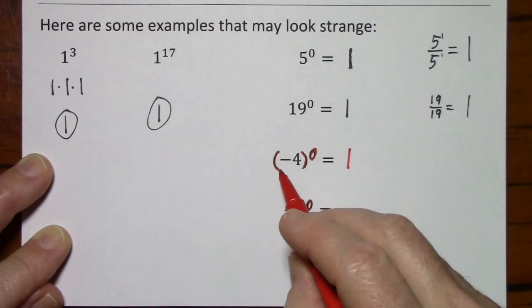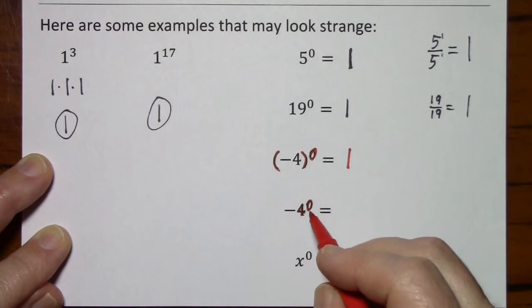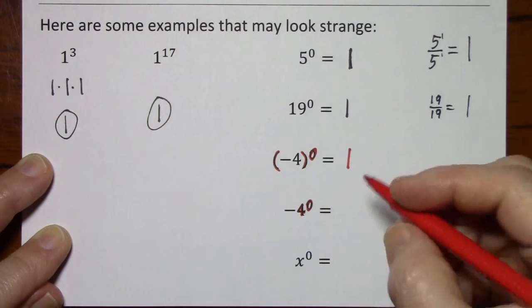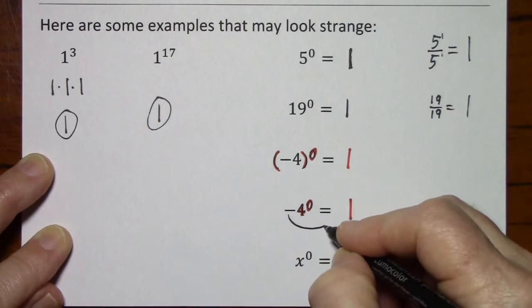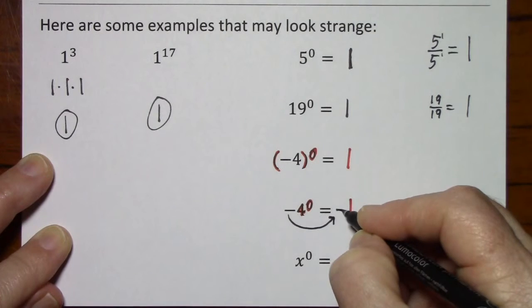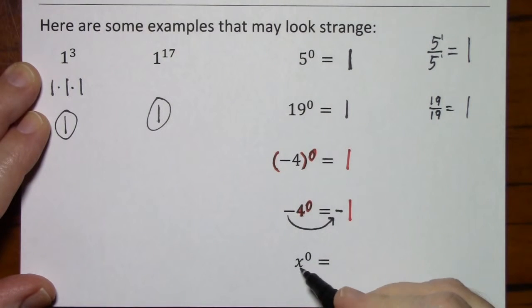If I want to include this negative, I have to put parentheses around it. So here, 4 to the 0 becomes 1. And you have to keep up with this negative.